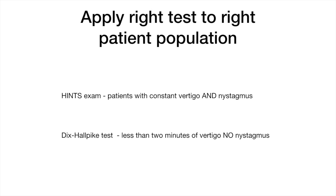It's very important that you apply the right bedside test to the right patient population. The HINTS exam should only be applied to patients with constant vertigo and spontaneous or gaze-evoked nystagmus, and the Dix-Hallpike test to those patients with a minute or two of vertigo who don't have nystagmus. The most common mistake is applying the wrong bedside test to the wrong patient population.